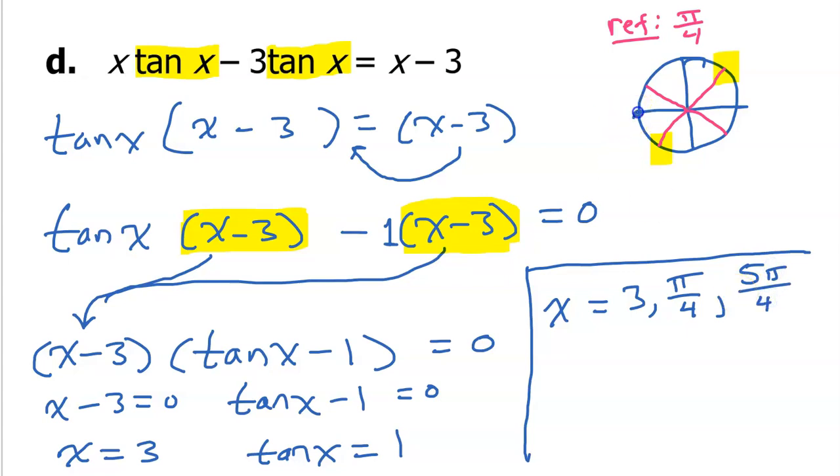Alright. And again, because pi itself can be thought of as 4 pi over 4. And that reminds me that this is 5 pi over 4.